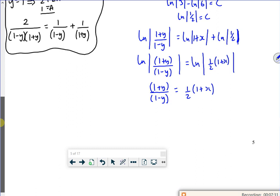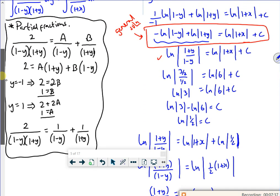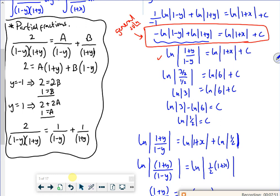So I've got 1 plus y over 1 minus y is a half of 1 plus x. Right now, does it want it y equals? Because I've done quite a lot of maths there. I've done partial fractions. I've got a general solution, which I could say is this one, couldn't I? If I move it down a bit, it could be that one, the general solution.